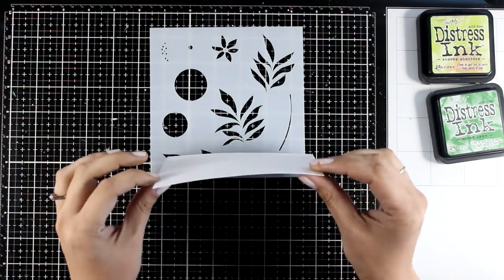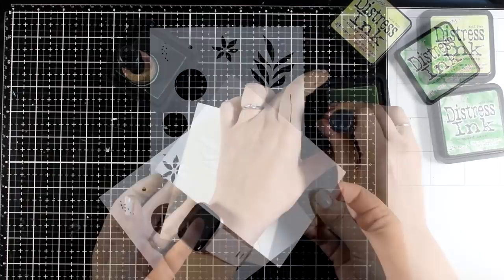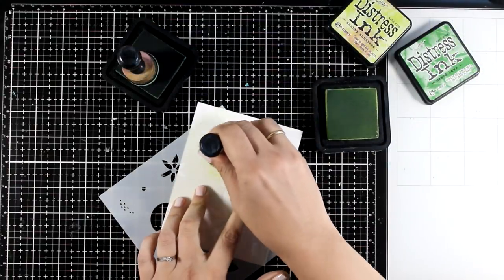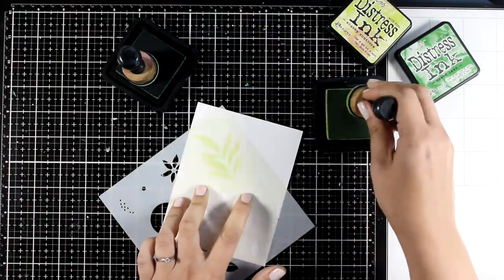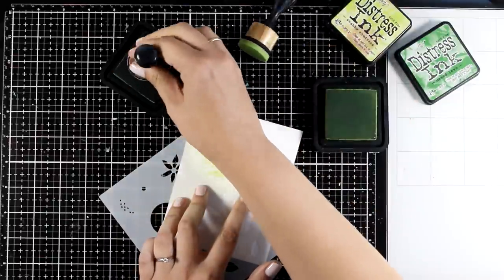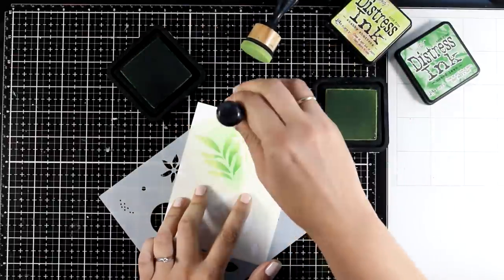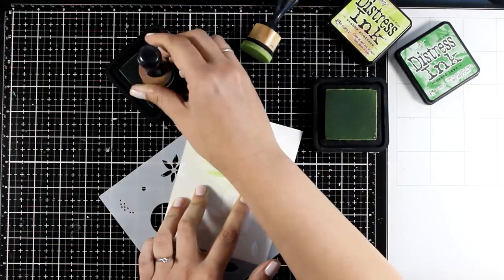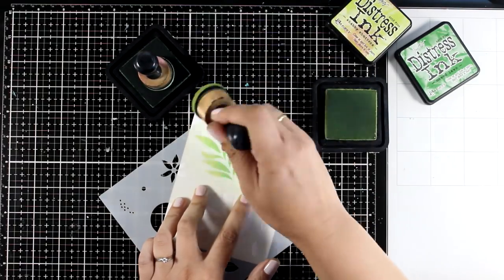For this faux loose watercolor technique you need to work on watercolor paper. So I'm going to place on top the stencil, and with my blending tool I'm going to apply two shades of green for the leaves. You can tape down your stencil if you like.